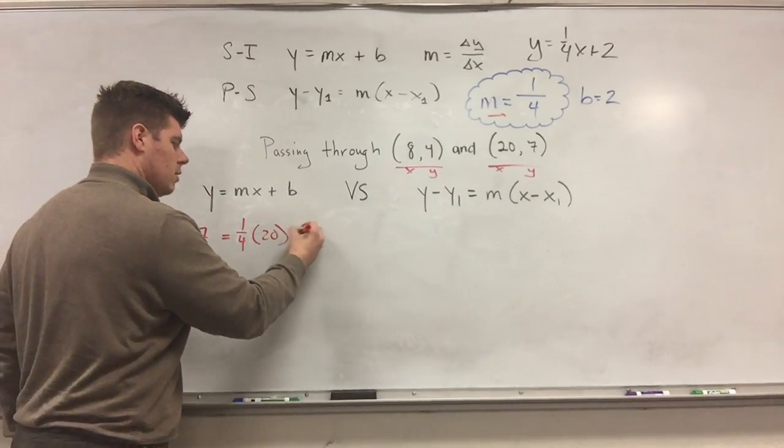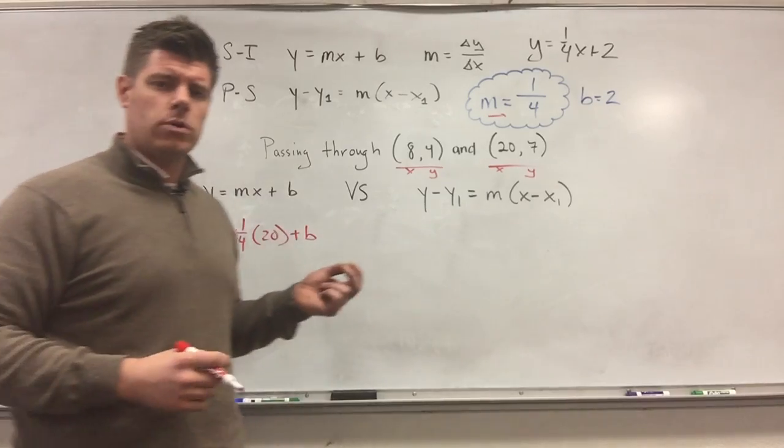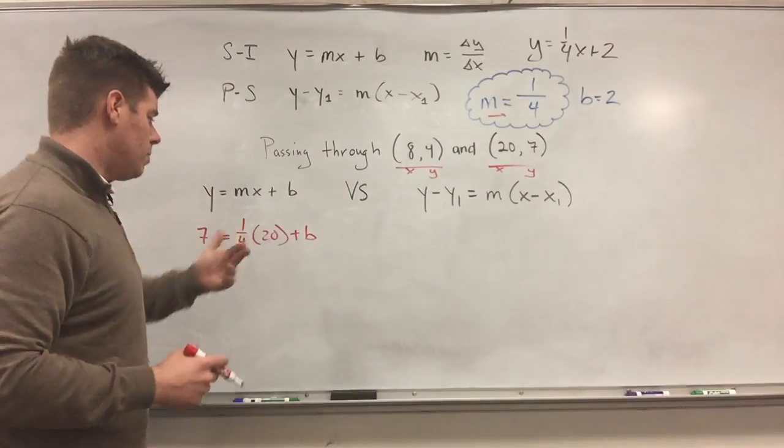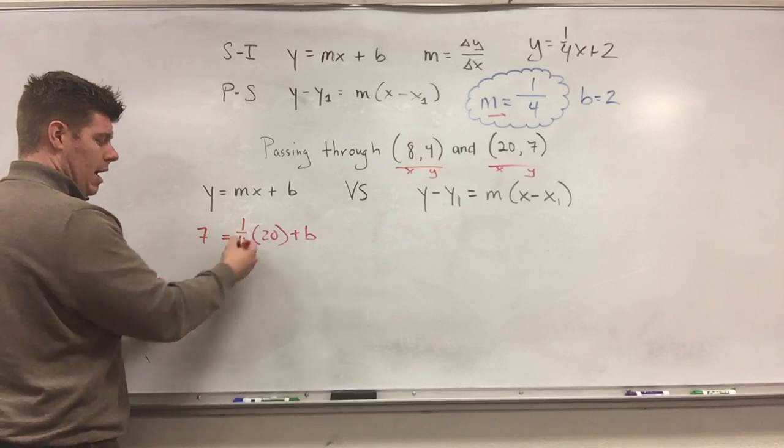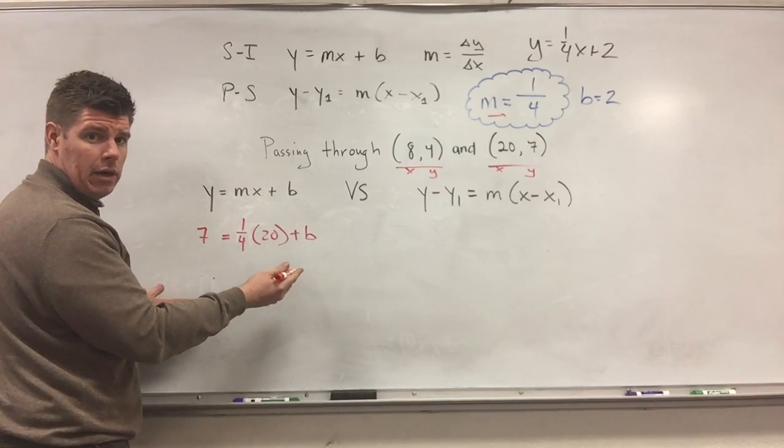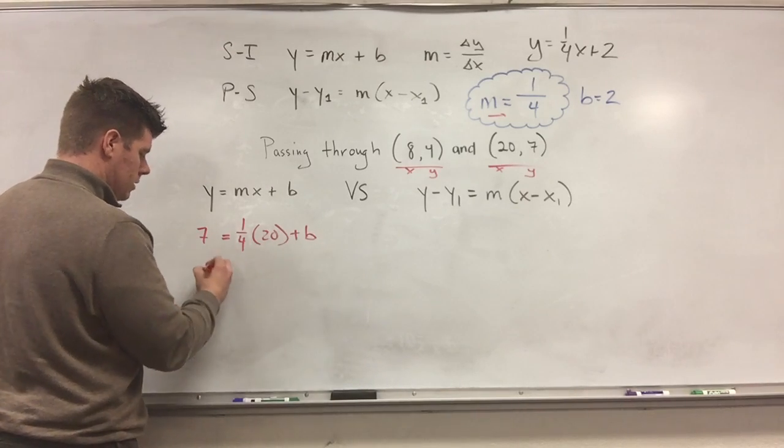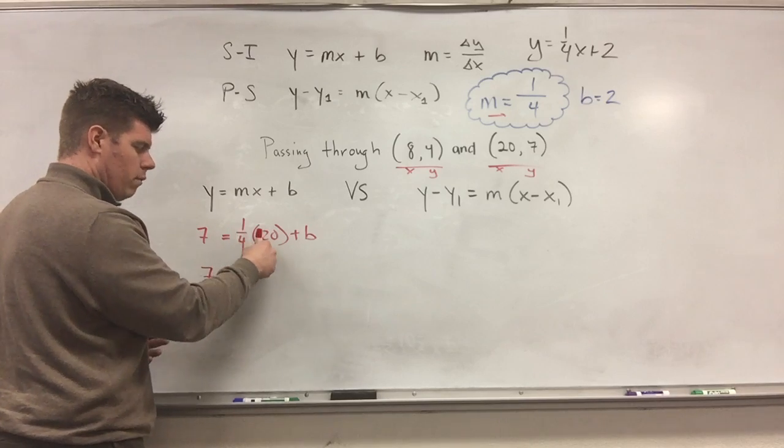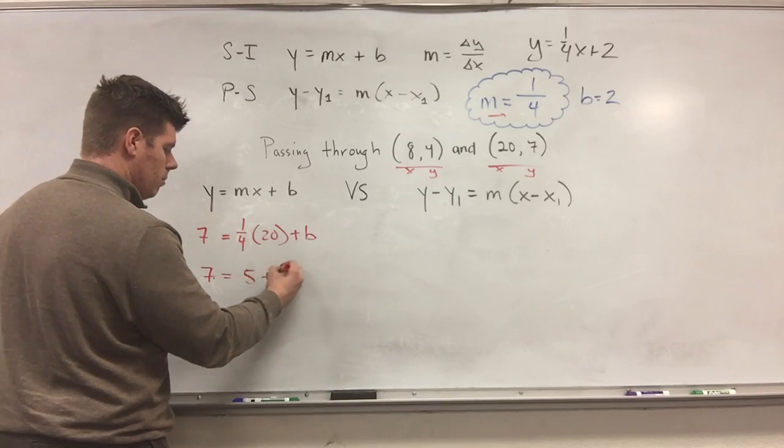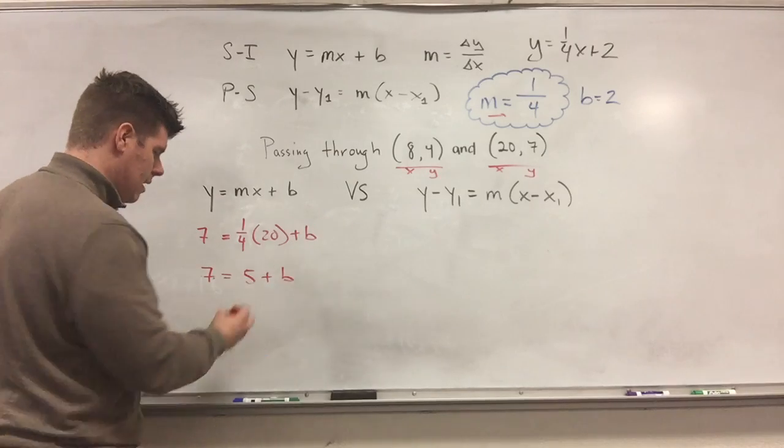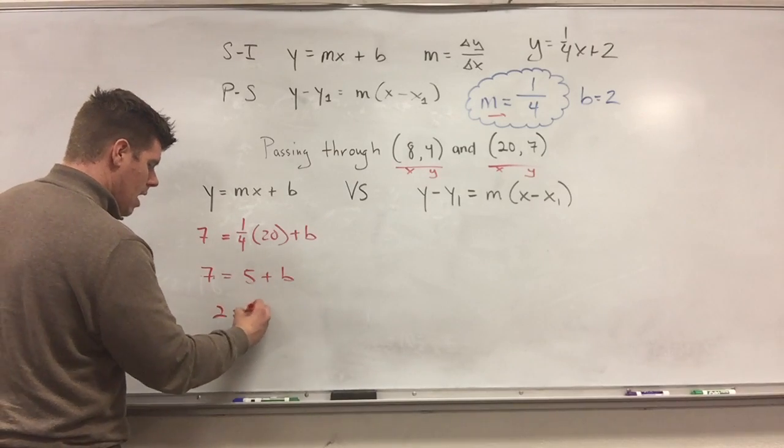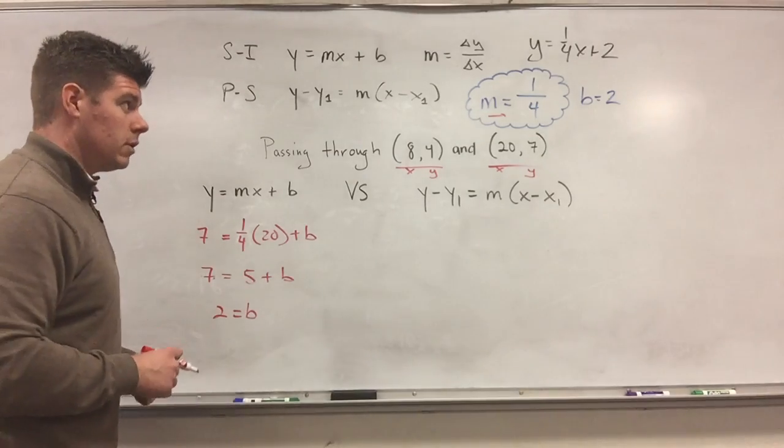So my m, replace it with what I calculated it to be. It's 1 fourth. The x, replace it with its pair is 20. Now I want to solve for b, so that's what I'm calculating. So to figure out the b, I just simply solve for b now like I would any equation. So 7 is now equivalent to 1 fourth times 20 is 5 plus b.